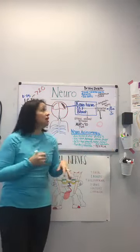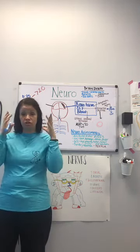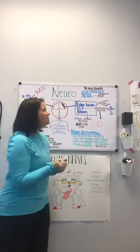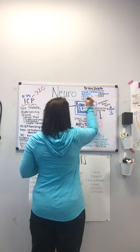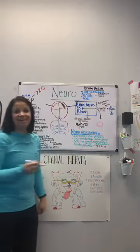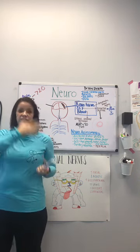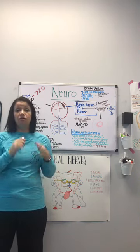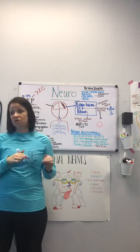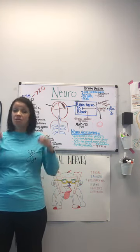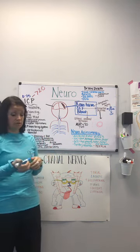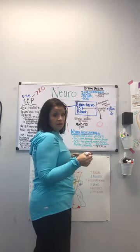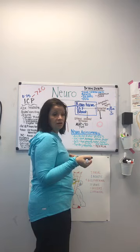In the cold caloric test, normal is nystagmus plus COWS deviation. Abnormal — no response — would be a sign of brain death. What is the next exam that we do to assess for brain death?